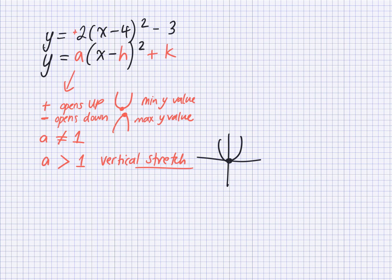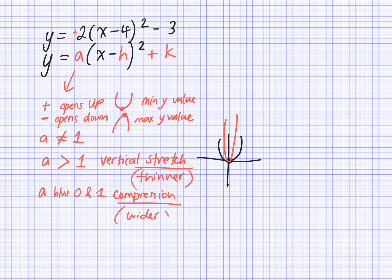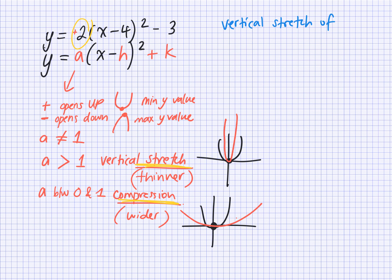The other one's compression. So if it's getting stretched, it's going to look thinner — like an elastic band being stretched, it's getting thinner than the parent function. If the a value is between 0 and 1, it has a compression, which means it's going to be wider than the parent function. The number tells you by what factor it's stretching or compressing. So the example we're looking at has a vertical stretch of 2.